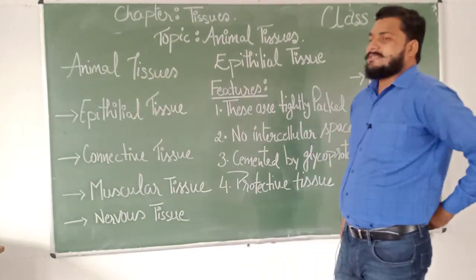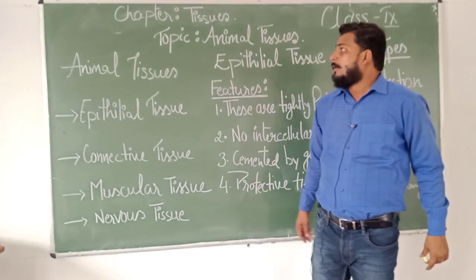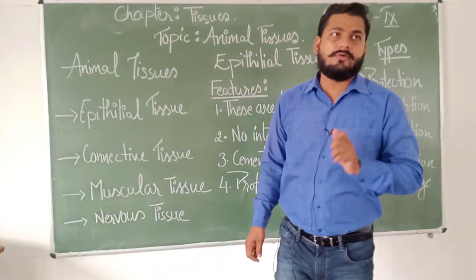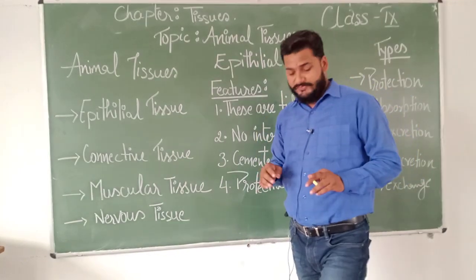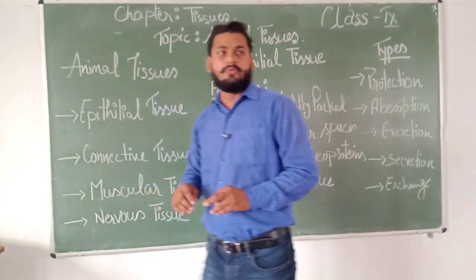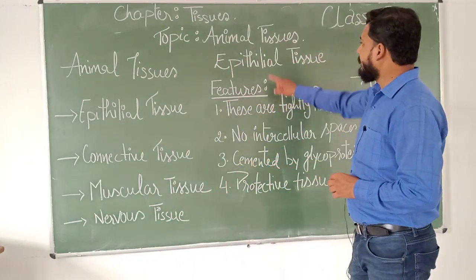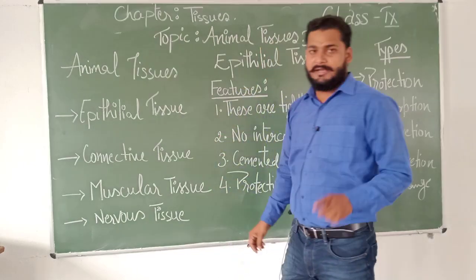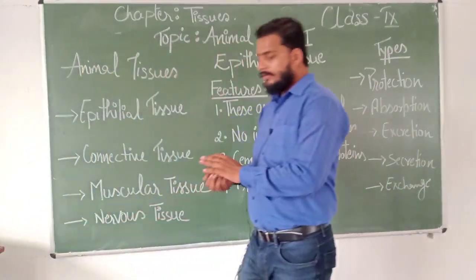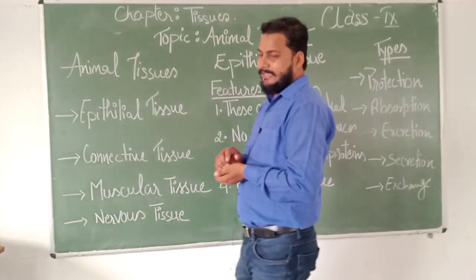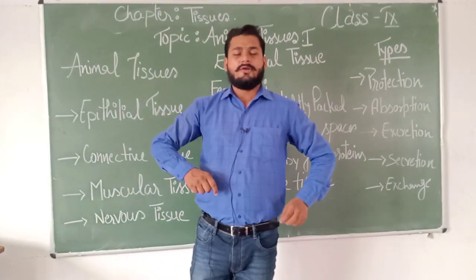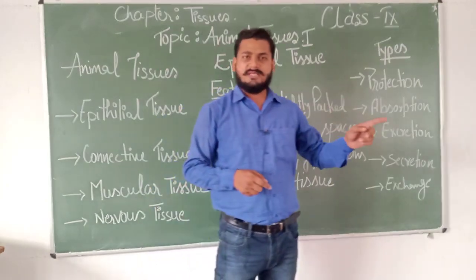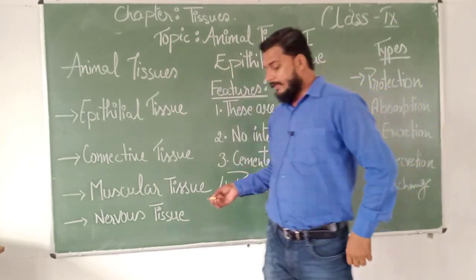Good morning class. Today we are going to talk about tissues. In the last class we had finished talking about animal tissues, and today we are going to continue. On the basis of the origin of the tissue, we find two types: number one is plant tissue and number two is animal tissue. Today we are talking about animal tissues.